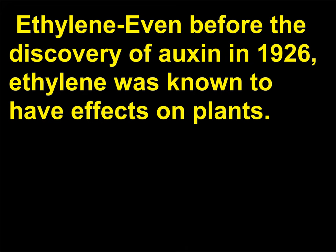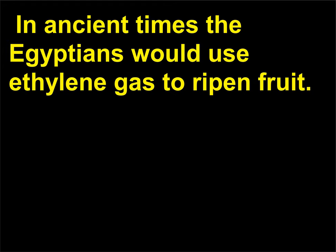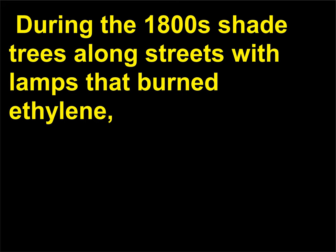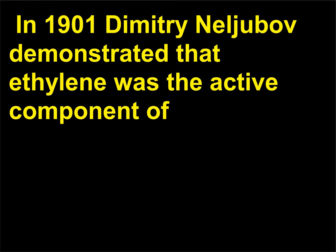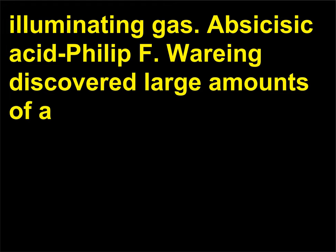Ethylene: Even before the discovery of auxin in 1926, ethylene was known to have effects on plants. In ancient times, the Egyptians would use ethylene gas to ripen fruit. During the 1800s, shade trees along streets with lamps that burned ethylene (the illuminating gas) would become defoliated from leaking gas. In 1901, Dmitry Neljubov demonstrated that ethylene was the active component of illuminating gas.